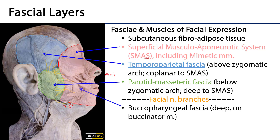One of the elements we really want to appreciate osteologically is the zygomatic arch. That zygomatic arch is one of the attachment sites for the masseter, and it also allows the temporalis to descend and insert on the mandible underneath it. The zygomatic arch serves as an approximate division between the temporal parietal fascia superiorly and the parotid masseteric fascia inferiorly.